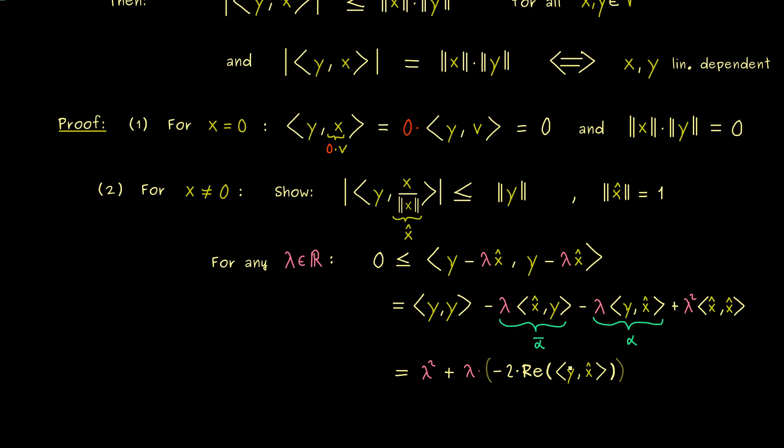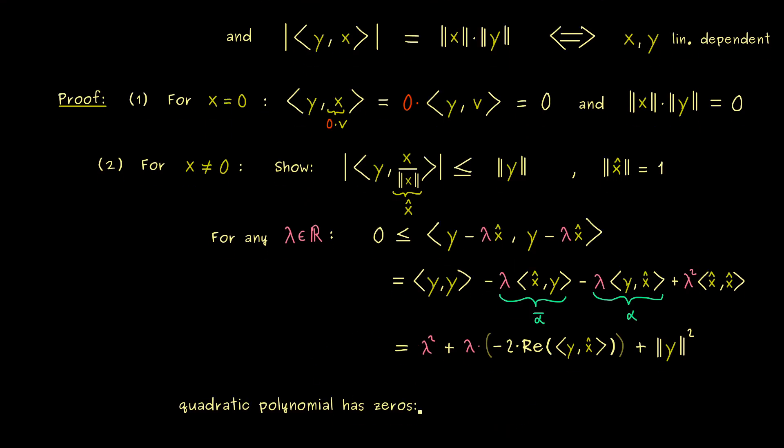Indeed, this is simply what you get if you add a complex number to the complex conjugate number. The imaginary part vanishes and you have the real part 2 times. Okay, and then the last thing is y in the norm squared. Okay, and there we have it. This is a quadratic polynomial in our scalar lambda.